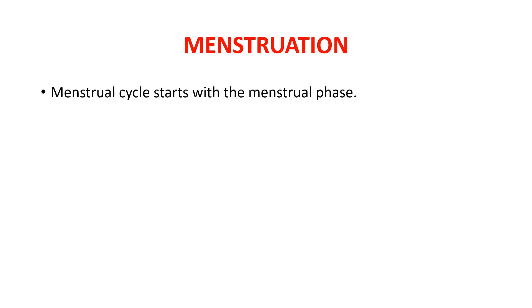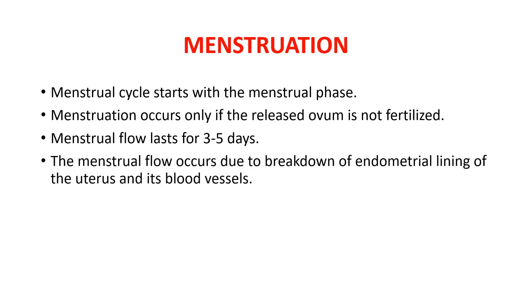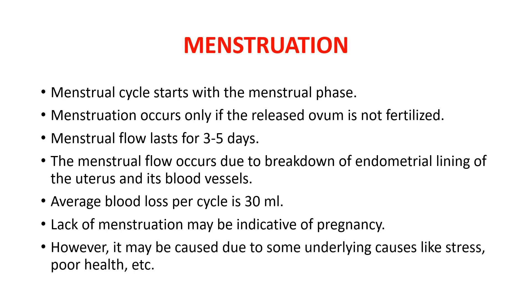Let us discuss about menstruation now. The occurrence of menstruation indicates the beginning of the menstrual cycle. If the ovum ovulated in the previous cycle is not fertilized, then only menstruation occurs. The menstrual flow lasts for 3 to 5 days, however it may vary from person to person. The flow occurs because of the endometrial lining breakdown. On average, 30 ml of blood is lost per cycle. During pregnancy, menstruation does not occur. Lack of menstruation may also occur because of stress, poor health, PCOS, etc.